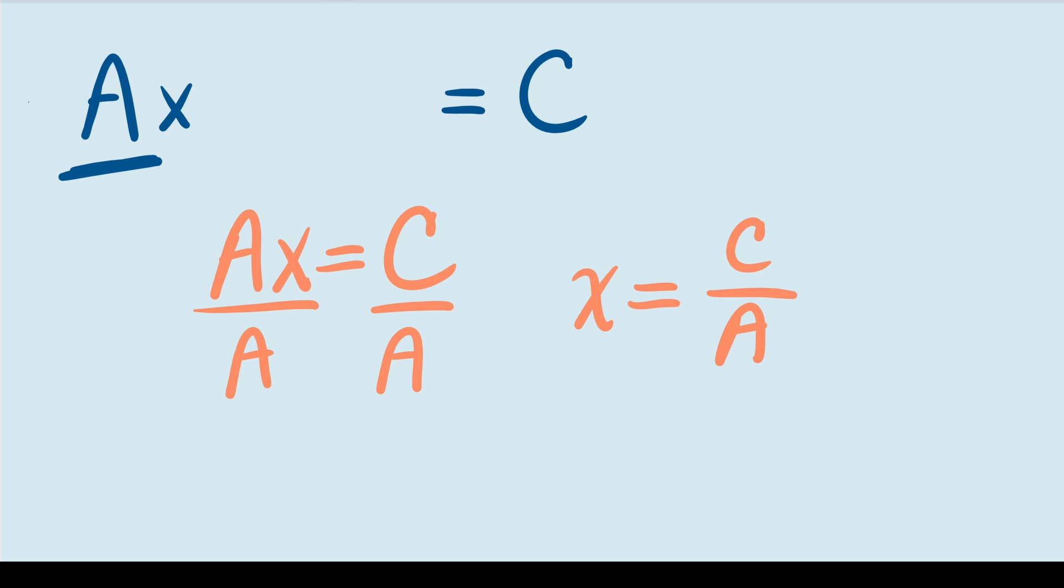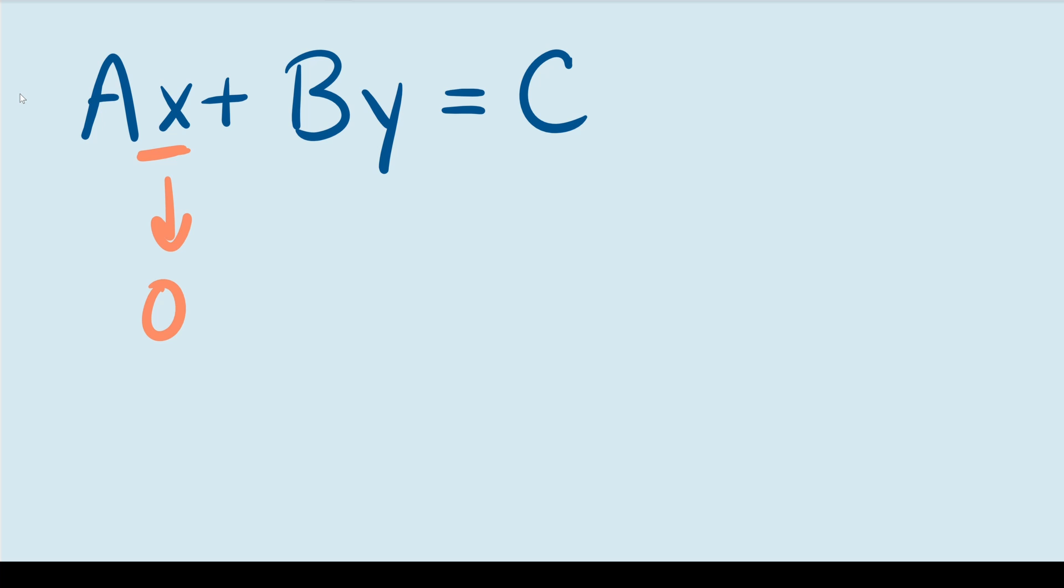I can do the same thing for the y intercept. All I have to do is plug in zero for x and what that does is it removes this whole term. So with that gone, I can divide by B and that gives me a y intercept of C over B.